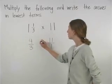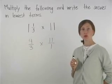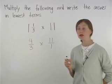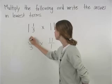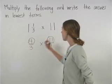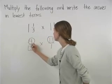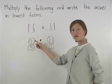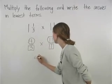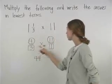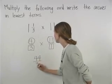So now we have 4/3 times 11/1, and we simply multiply across the numerators and multiply across the denominators. So we have 4 times 11, which is 44, and 3 times 1, which is 3.